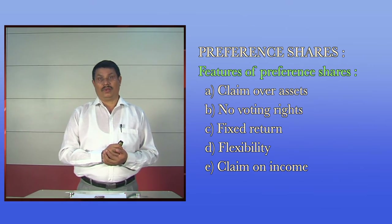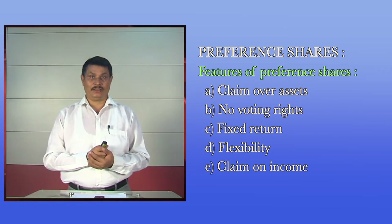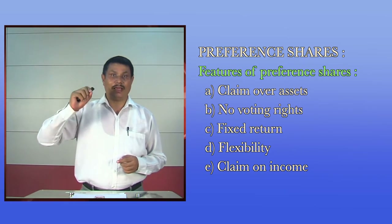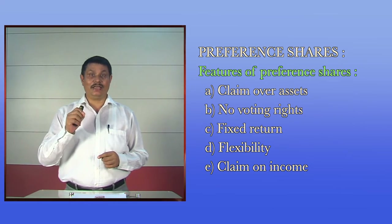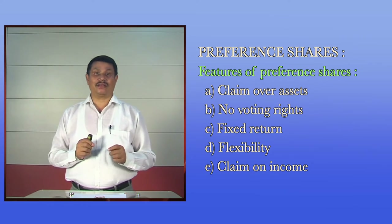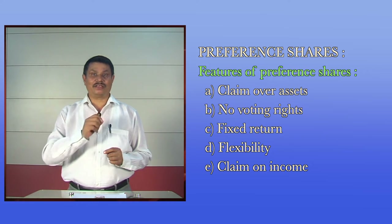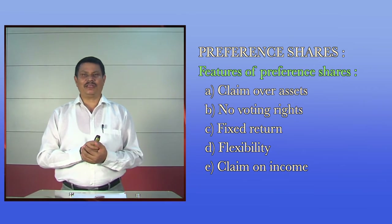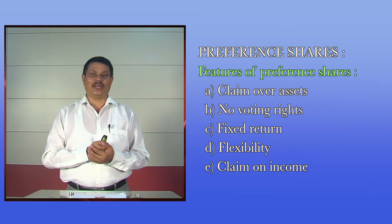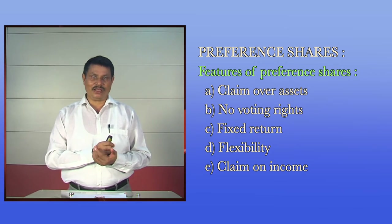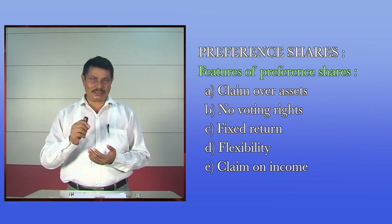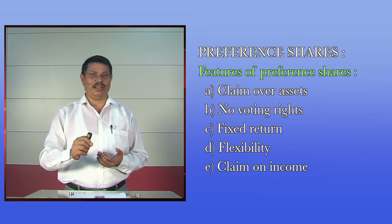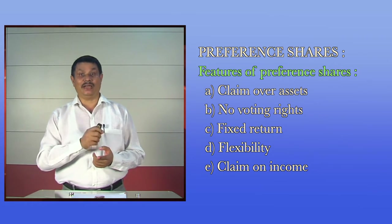Another kind of share is preference shares. According to Section 85 of the Companies Act, preference shares are those which carry preferential rights as to the payment of dividend at a fixed rate and as to repayment of capital in case of winding up of the company. The rate of dividend on these shares is fixed, and the dividend must be paid before any dividend is paid to ordinary shareholders.